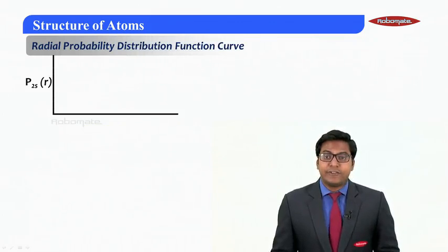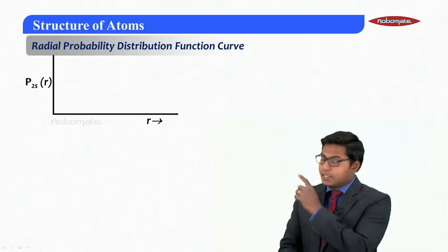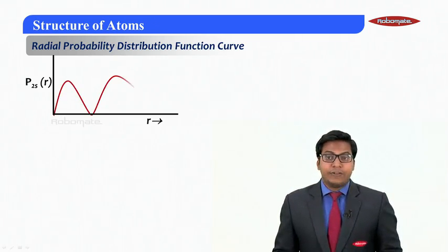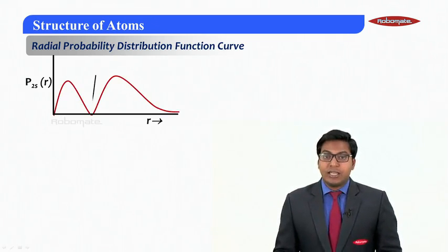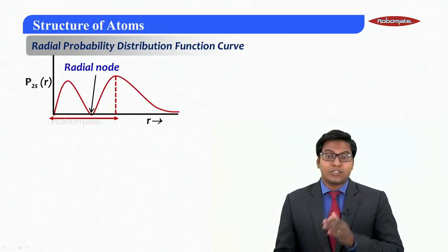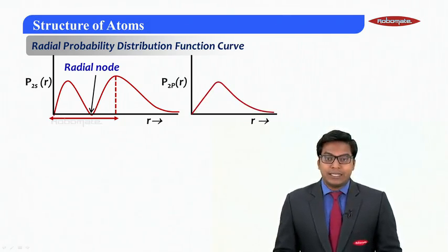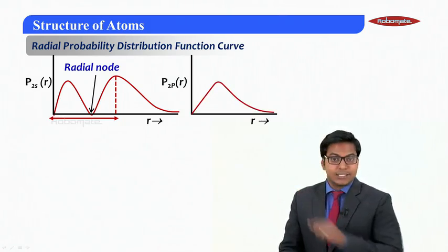Now if I keep drawing this for different orbitals, total probability distribution curve versus r - if it is for 2s, this is what we found and it has one radial node with maximum radius of maximum probability at a distance. Similarly if I draw it for 2p, I will get no nodes here.